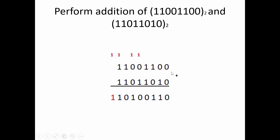Now we will see an example: perform addition of two binary numbers. 0 plus 0 is 0, 0 plus 1 is 1, 1 plus 0 is 1, and 1 plus 1 results in 0 with carry 1. That carry 1 is added with the next two bits. So 1 plus 0 is 1, and 1 plus 1 is 0 with carry 1 again. Then 1 plus 0 is 1, and 1 plus 0 is 1. When adding three 1s, sum is 1 and carry is 1.